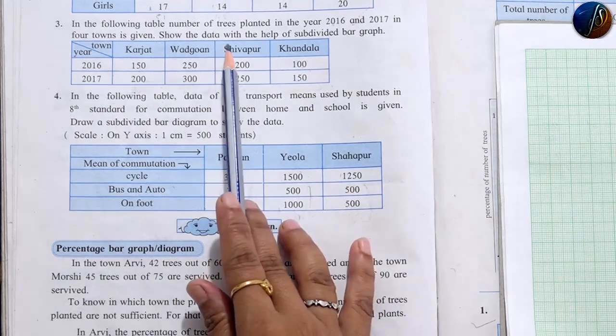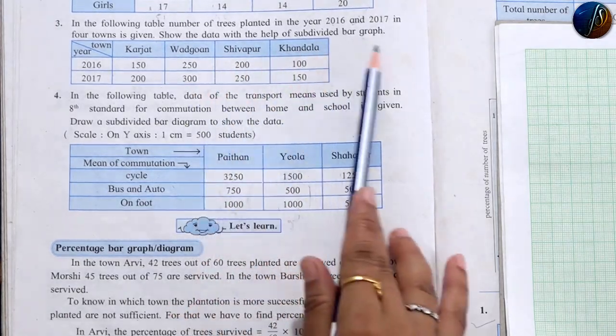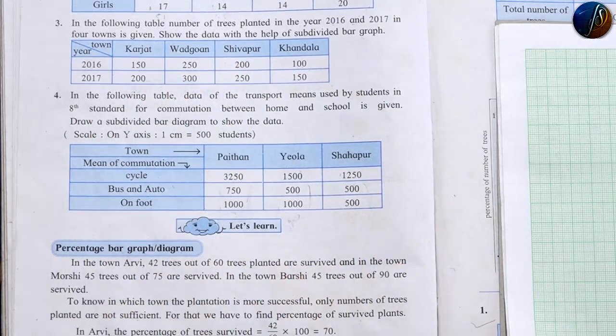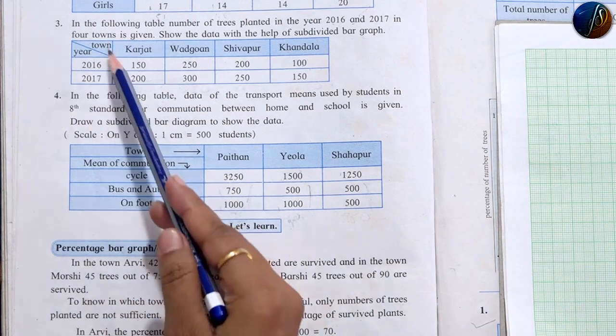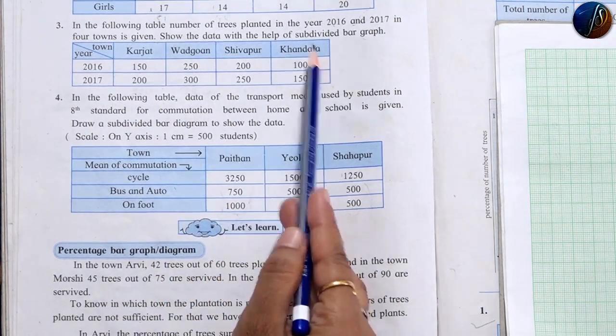Show this data with the help of a subdivided bar graph. Now think about what changes occurred between 2016 and 2017, and what information is available.